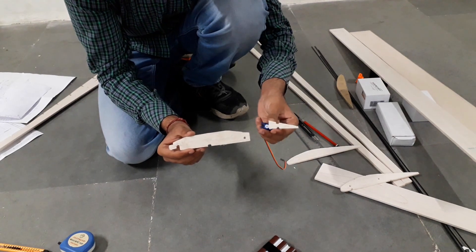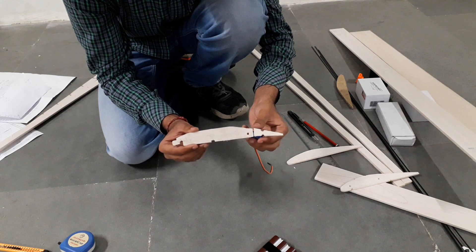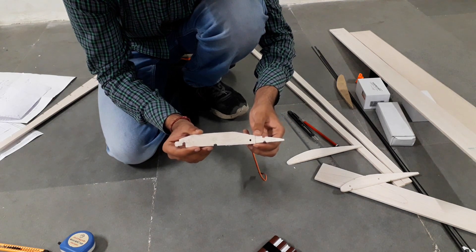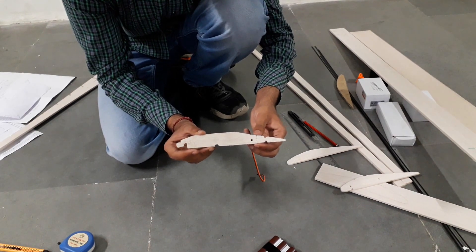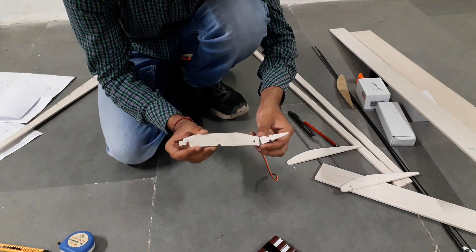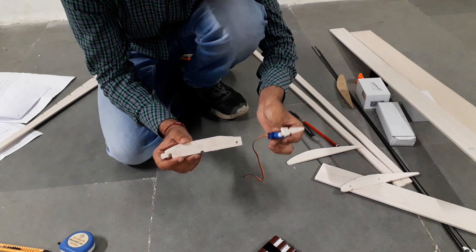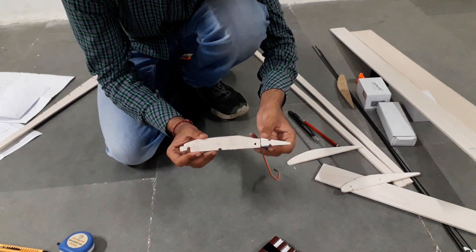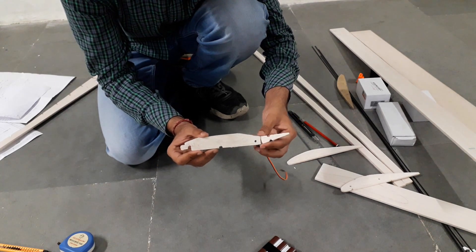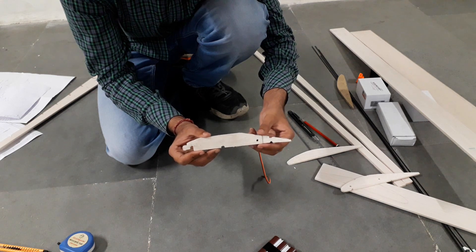This is our aileron, it will be fixed here and it will move like this with the help of this servo. It will give it rotation like this.